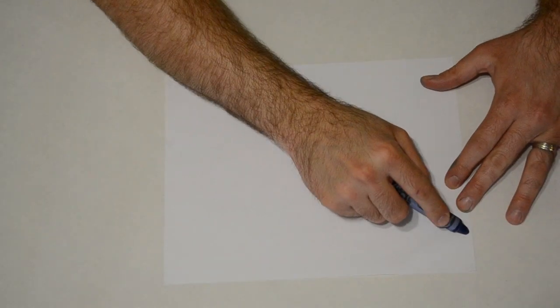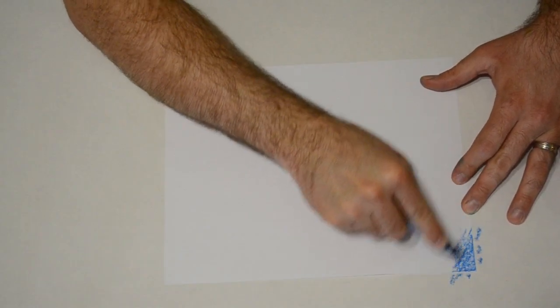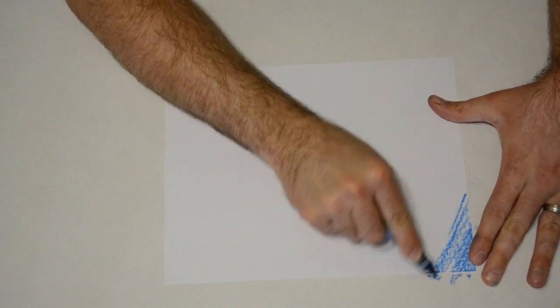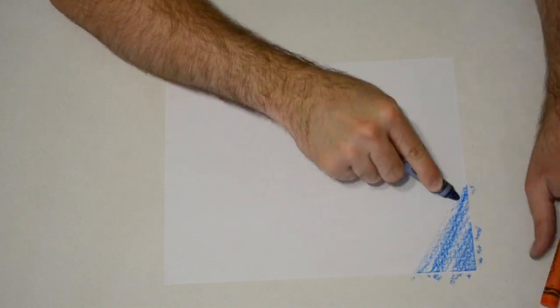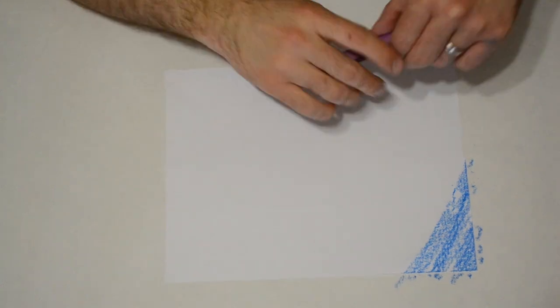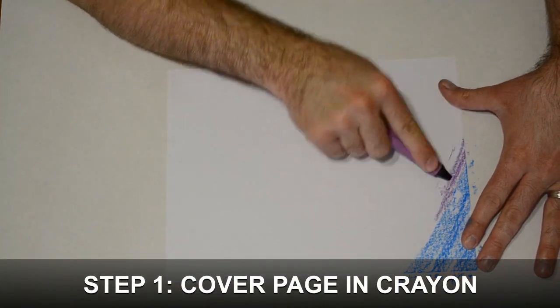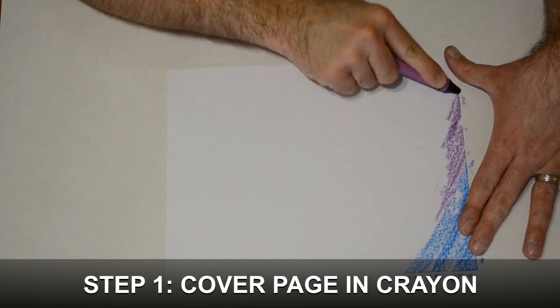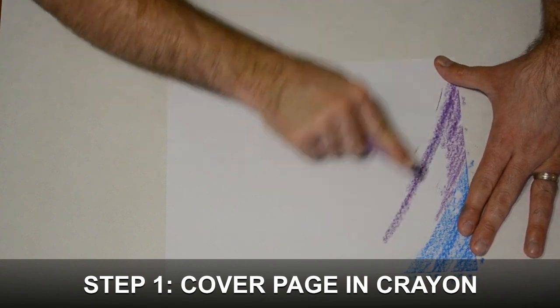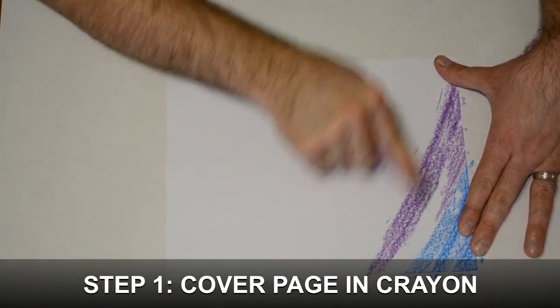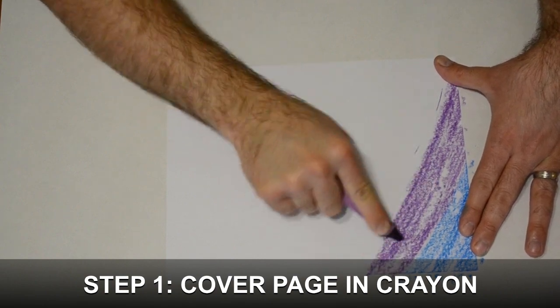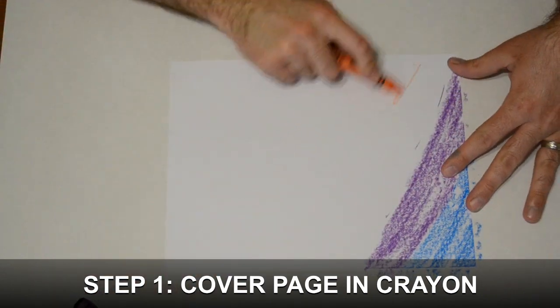Alright, let's get started. So the first step is to color your page. Now you are not drawing pictures, you are just working to cover the entire piece of paper with crayon. You can do shapes. You can just do lines of color the way I am. It doesn't matter. What's important is that the entire page gets covered in crayon.